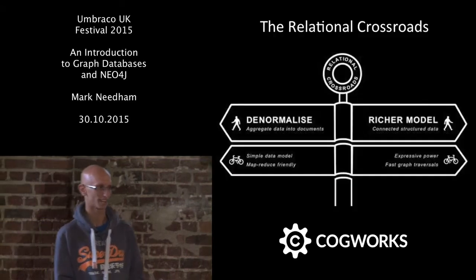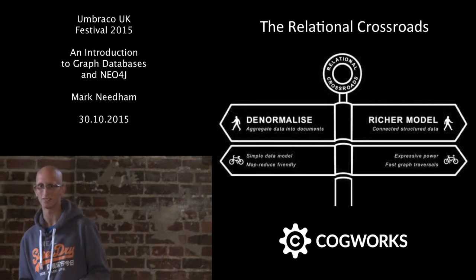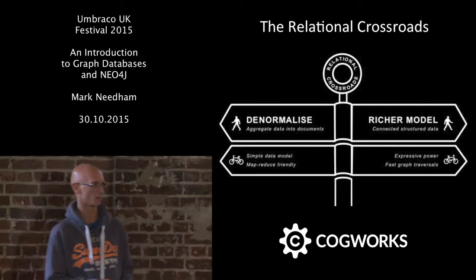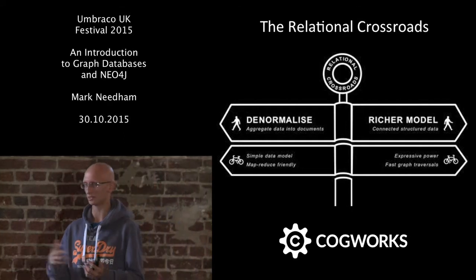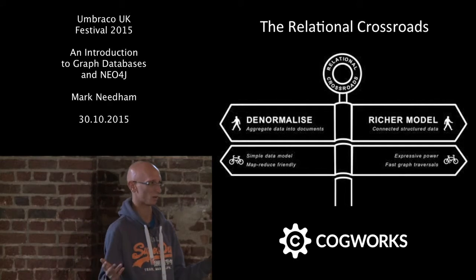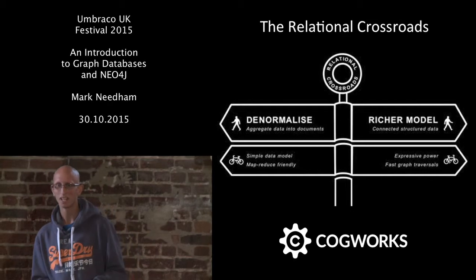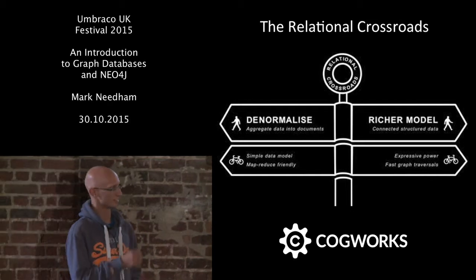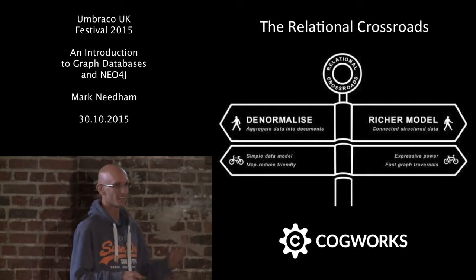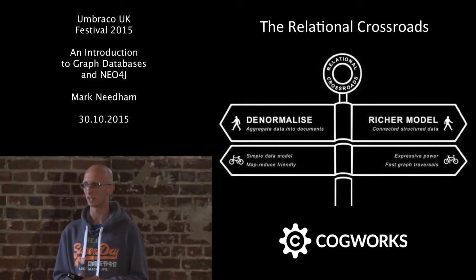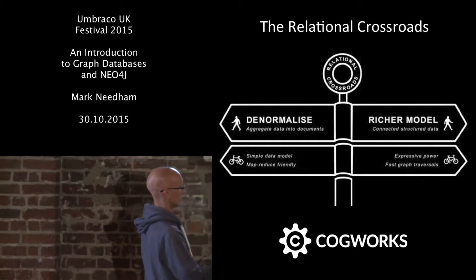Quick introduction — how did we get to the point where a graph database was a thing? For most of us, the first six or seven years working, there was no choice for your website's back-end database. It was pretty much a relational database. Around 2006–2007, people were like, "This relational thing was cool, but there are some problems where it's not working so well." The early running in the NoSQL space was focusing on how to aggregate data.